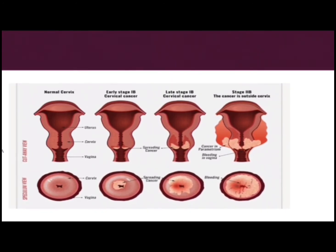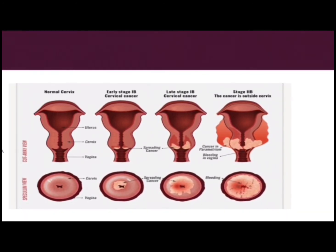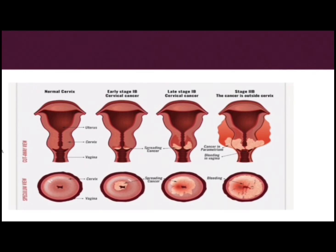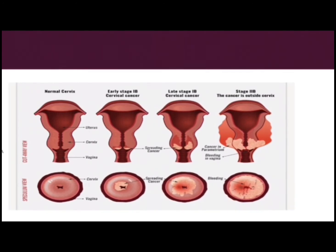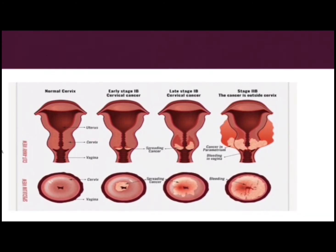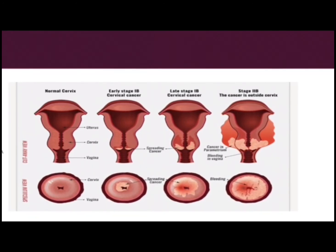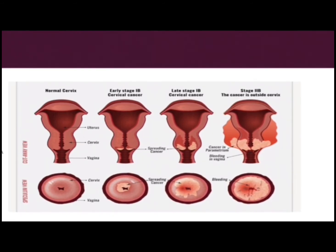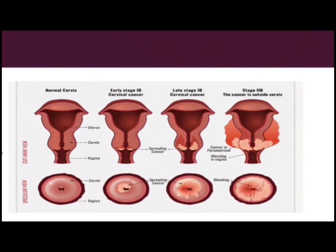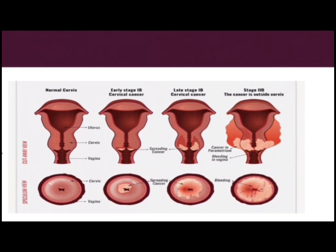Adenocarcinoma is the type of cervical cancer that begins in the column-shaped glandular cells that line the cervical canal. Sometimes both types of cells are involved in cervical cancer, and very rarely, cancer occurs in other cells in the cervix. Here we can see the normal cervix, early stage, late stage, and stage 2b of cervical cancer.